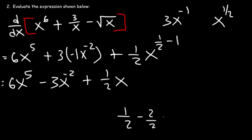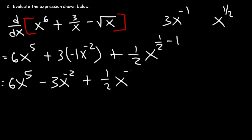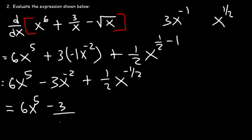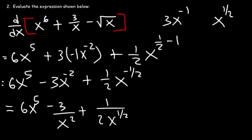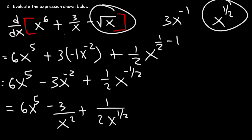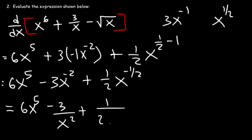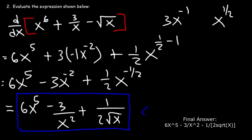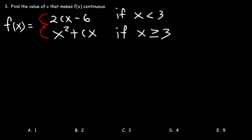One half minus one equals negative one half. We eliminate negative exponents by moving variables to the denominator: negative 3x to the minus 2 becomes negative 3 over x squared, and x to the negative one half becomes 1 over the square root of x. The final answer is 6x to the fifth minus 3 over x squared plus 1 over the square root of x.